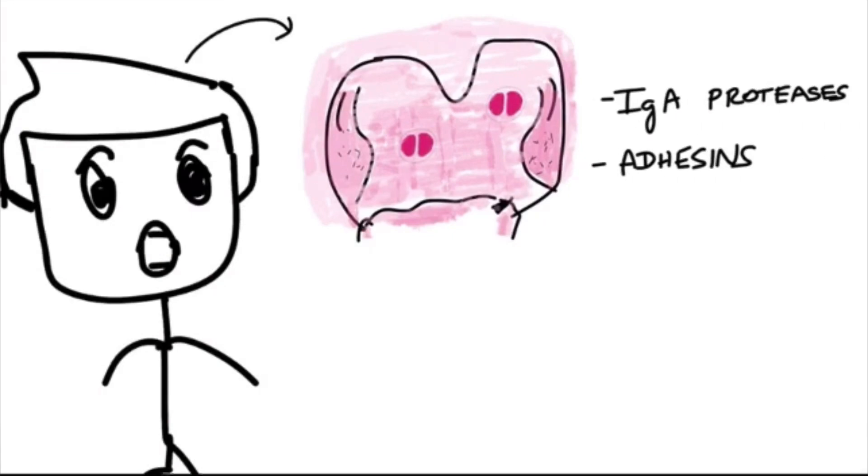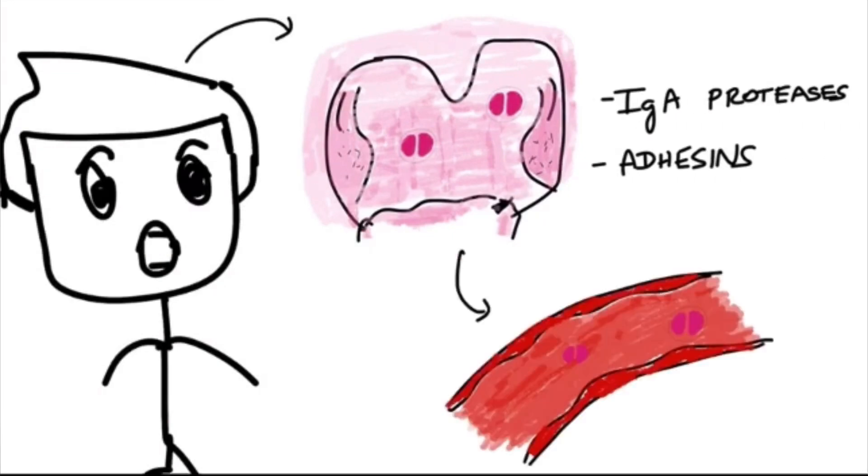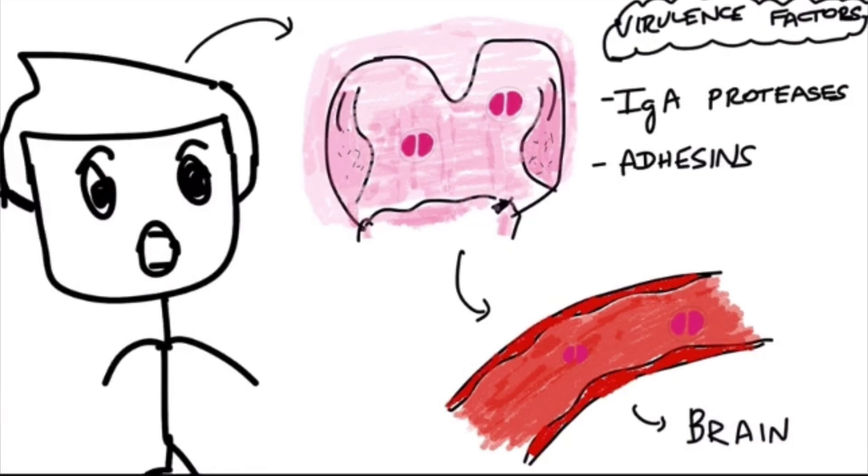Since he is susceptible, with the help of factors like IgA proteases and adhesins, it can enter the bloodstream of this person and reach various sites, most commonly the brain, causing meningitis. IgA proteases and adhesins are other virulence factors of Meningococcus.